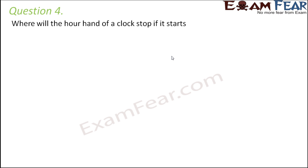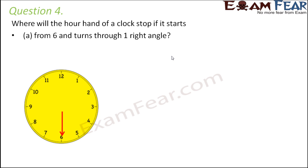Let's look at question number 4. Where will the hour hand of a clock stop if it starts from 6 and turns through one right angle? Okay, so here we have just shown the hour hand of the clock to avoid any confusion. So this is your hour hand and it starts from 6. It turns through one right angle. Now can you tell me why is it not mentioned here whether it will turn clockwise or anti-clockwise? That's because it's a clock, so a clock will always move in the clockwise direction, right?